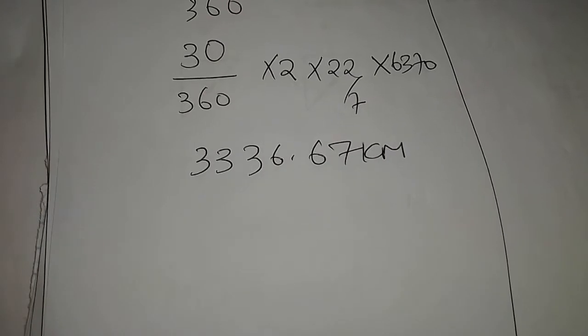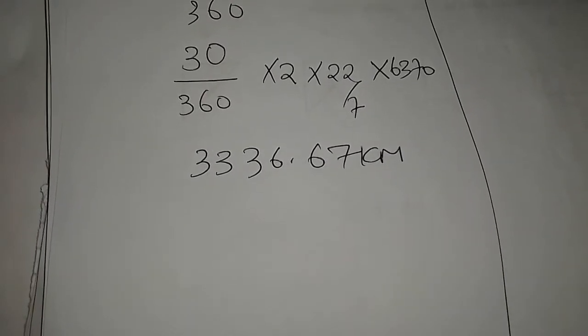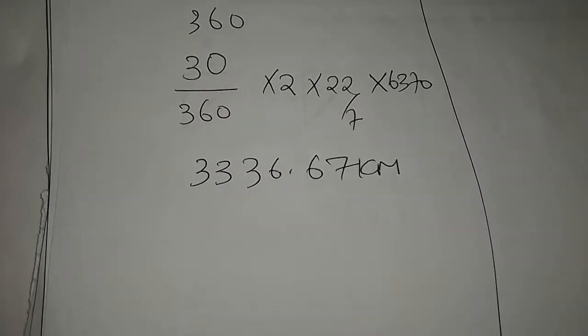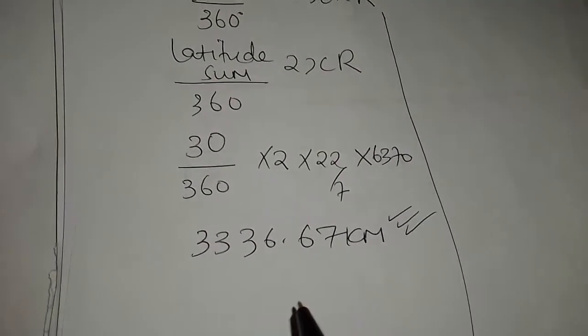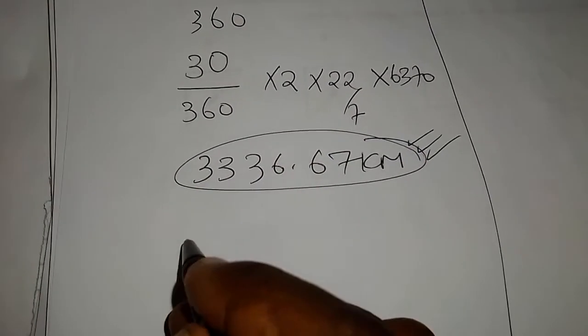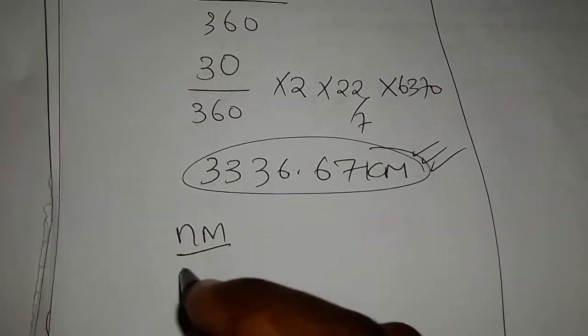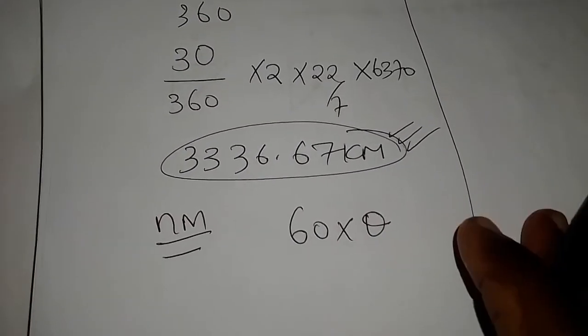That means points P and points R are actually having the same distance in between them. If I'm done with that part, I can be told to actually get the distance in kilometers. That's what I've done. And then in nautical miles, I'll just say 60 times theta.